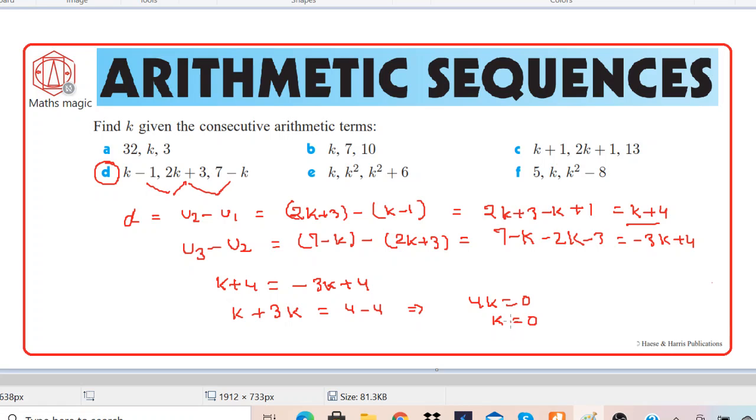So let's verify whether it's working or not. If you replace k with 0, so your first term becomes minus 1, and then it becomes 3, and then it becomes 7.